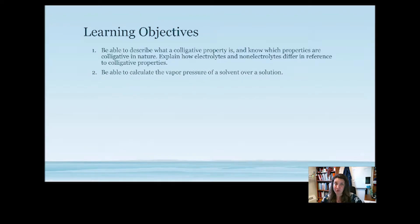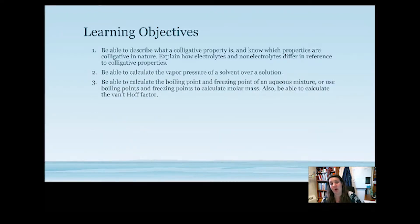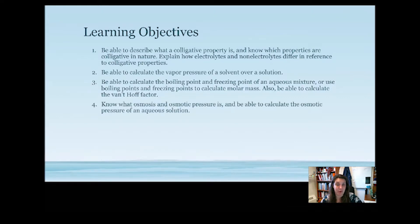One of our colligative properties we're going to look at is vapor pressure, and we're going to be able to calculate the vapor pressure of a solvent over a solution. We'll also look at boiling point and freezing point, and be able to calculate them for an aqueous mixture. From there we can calculate molar mass, and we want to be able to calculate the Van't Hoff factor using boiling and freezing point information. We'll also look at osmosis and osmotic pressure, and be able to calculate osmotic pressure, Van't Hoff factor, and molar mass using osmotic pressure.